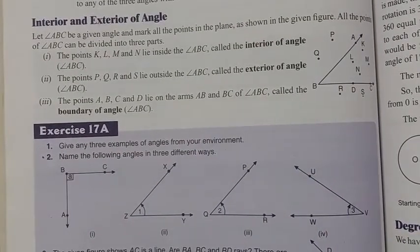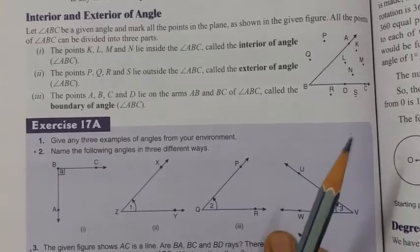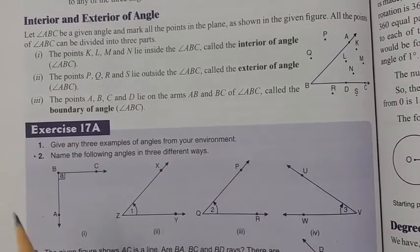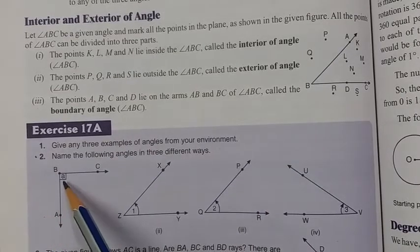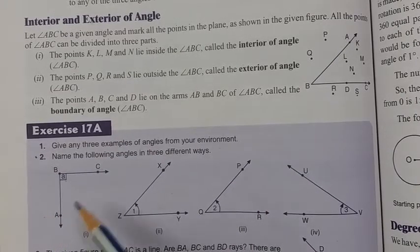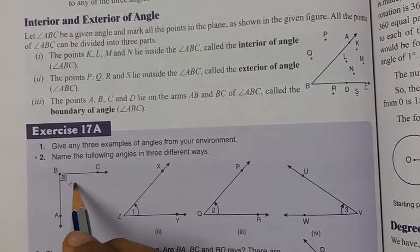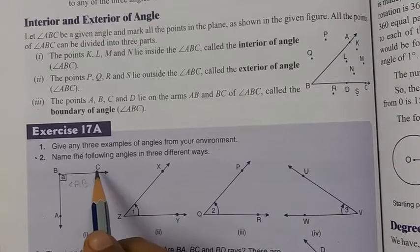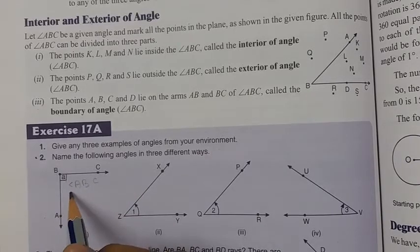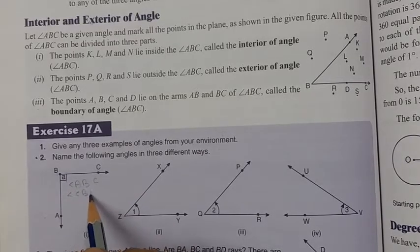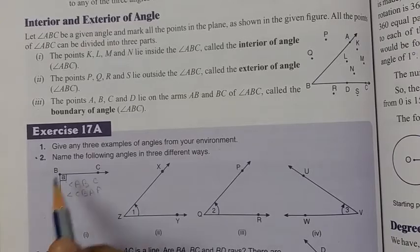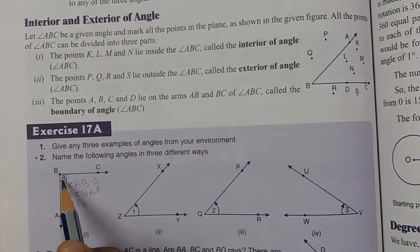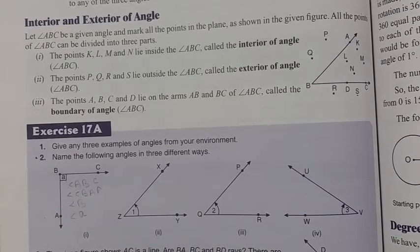Question 2: Name the following angle in three different ways. We have to indicate the three different ways in which it can be written. For this figure, you can write angle ABC, or angle CBA, or simply angle B. Otherwise, there is a letter A here, so you can also write angle A.